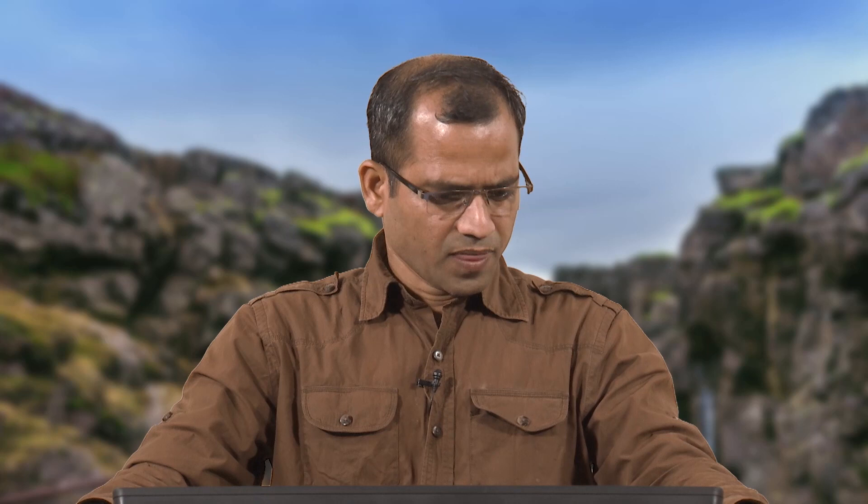During plate interaction, when two different plates are interacting, the crust is totally taking part in this interaction and the lower part of the lithosphere, that is the mantle, is also interacting. That is why the crustal compositional stratigraphy, crustal behavior, crustal rigidity, and crustal composition must be understood very clearly.